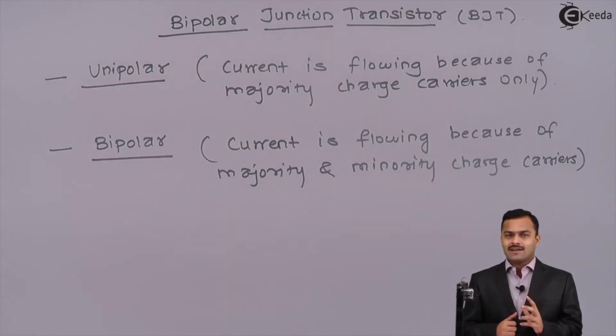Similarly for trivalent. For trivalent, one vacancy for electron is there which we call holes. Holes are more in number. Hence, majority charge carriers are holes whereas electrons are less in number. Hence, minority charge carriers are electrons.